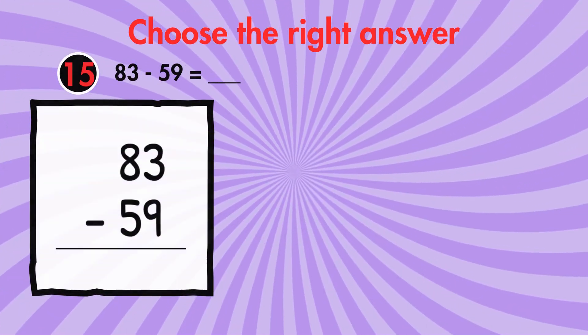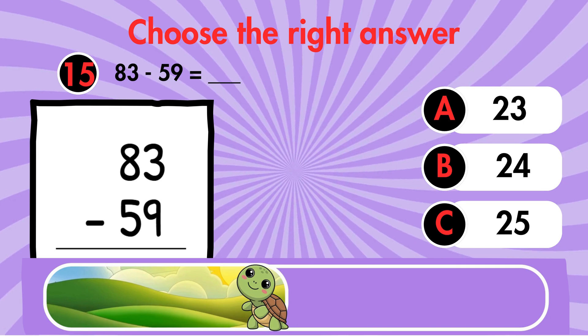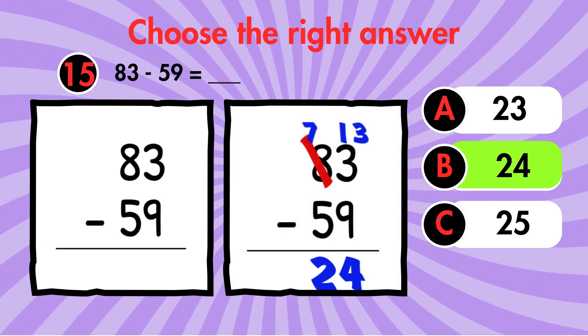Question 15. 83 minus 59 equals what? Answer 24.